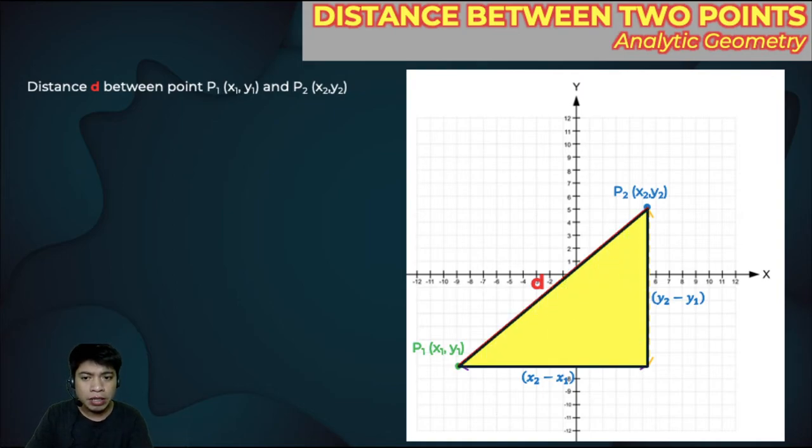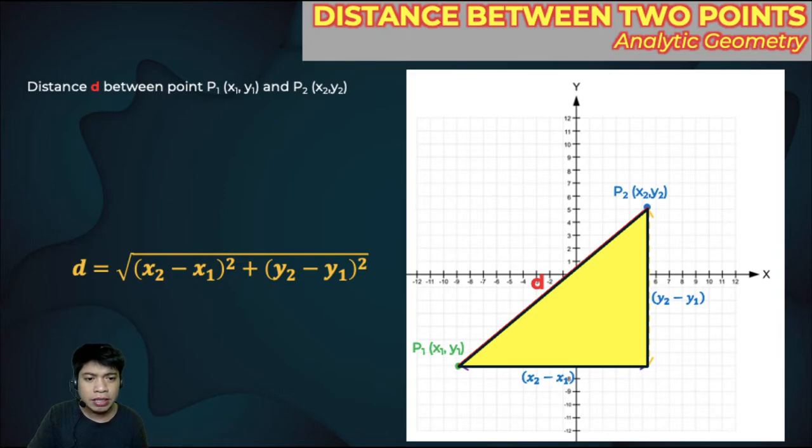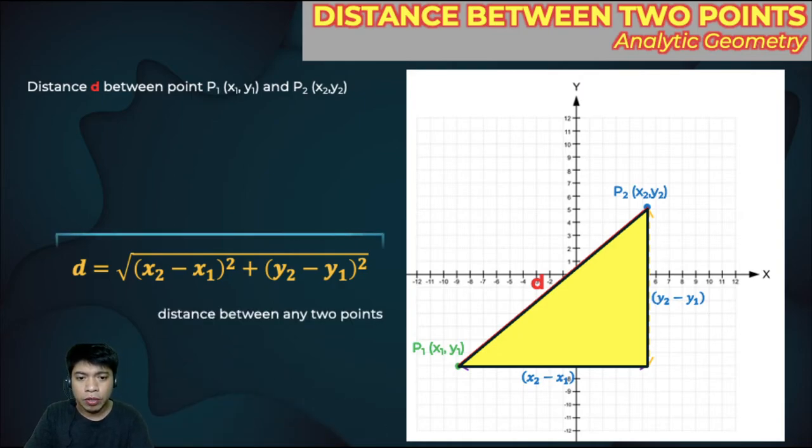We're going to use this triangle. By using the Pythagorean theorem, the distance will equal the square root of the horizontal distance squared plus the vertical distance squared. The d here is the hypotenuse, y2 minus y1 is one side of the right triangle, and x2 minus x1 is the other side. This is the formula for the distance between two points in the Cartesian plane.